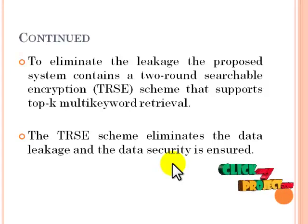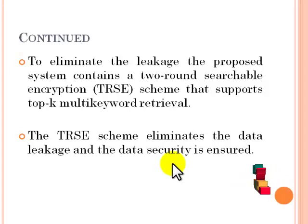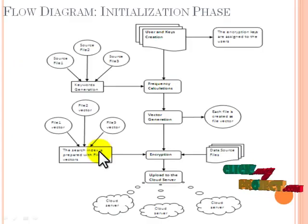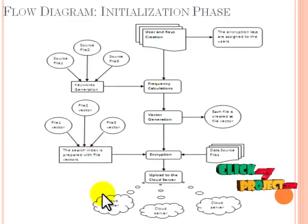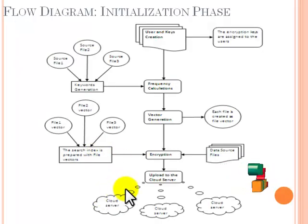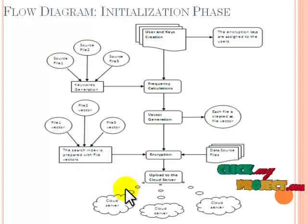In this way, information leakage is eliminated and data security is improved. Let's see the flow diagram of the project. The project consists of two phases: the initialization phase and the retrieval phase.